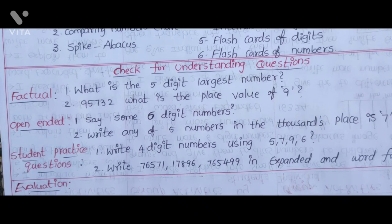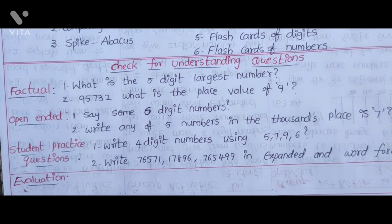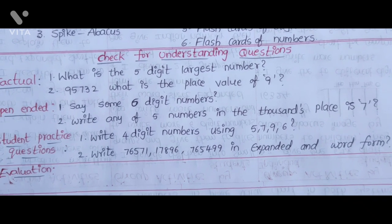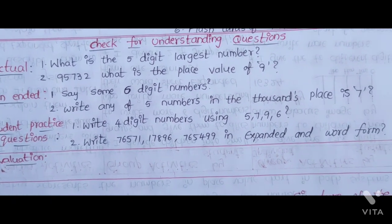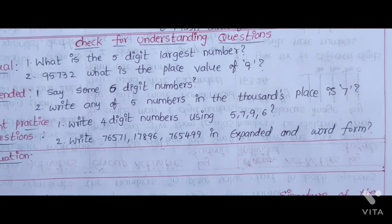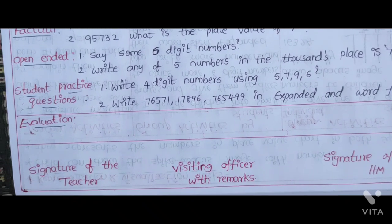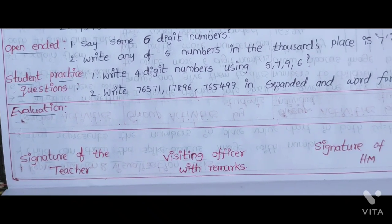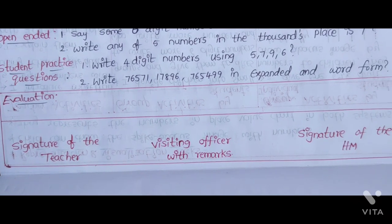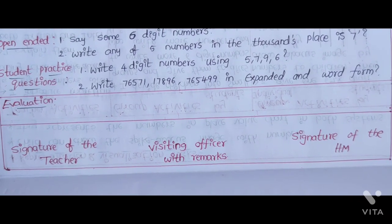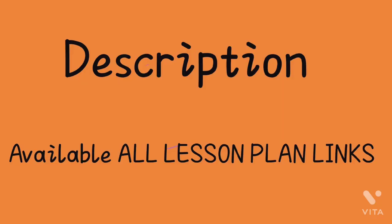Check for Understanding Questions — Factual: What is the 5-digit largest number? Answer: 95,732. What is the place value of 9? Open-Ended: Say some 6-digit numbers. Write any 5 numbers whose 1000s place value is 7. Student Practice Questions: Write 4-digit numbers using digits 5, 7, 9, 6. Write the Expanded Form and Word Form for these numbers. Assessment while learning is also included. Signature of the Teacher and Signature of the HM/Visiting Officer with Remarks.